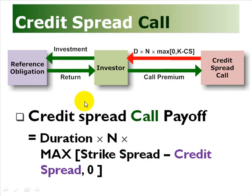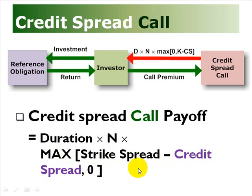For the credit spread call, it's just the opposite, and just as confusing. The buyer of the credit spread call pays a premium and will profit if there is a narrowing of the credit spread. The payoff is duration multiplied by notional multiplied by the maximum of (strike spread minus actual credit spread, 0) — so the two terms are switched relative to the put. It's a reduction or narrowing of the credit spread that creates a profit for the buyer of the call. Either way, whether it's a purchase of the call or the put, the investor needs to make an up-front payment — that's the guaranteed part — while the payoff coming back is the contingent part.